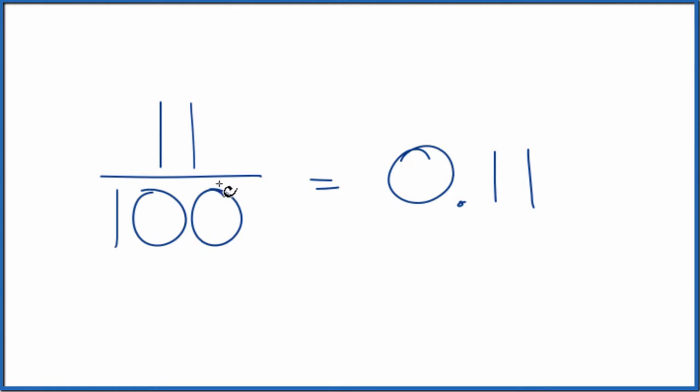The other way we could do this: since we have 100, we could move the decimal place one, two places to the left.